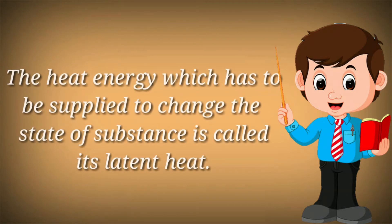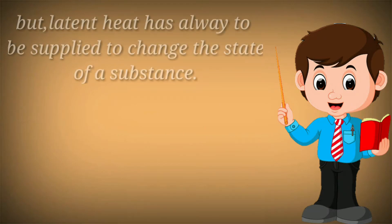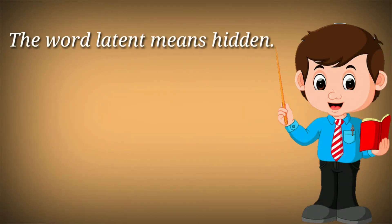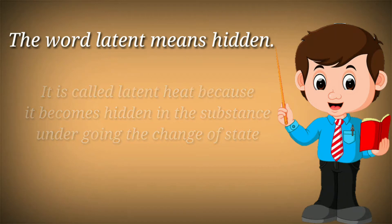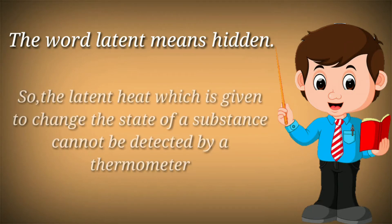The heat energy which has to be supplied to change the state of a substance is called its latent heat. Latent heat does not rise or increase the temperature, but latent heat has always to be supplied to change the state of a substance. The word latent means hidden. It is called latent heat because it becomes hidden in the substance undergoing the change of state and does not show its presence by rising the temperature. So the latent heat given to change the state of a substance cannot be detected by a thermometer.